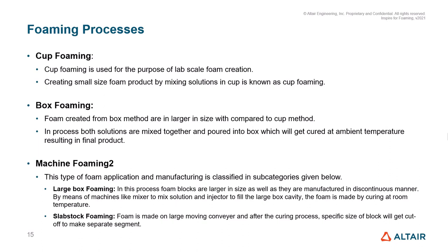In slab stock foaming, foam is made on a large moving conveyor, and after the curing process is complete, the specific size of the block will get cut off to make a separate segment.